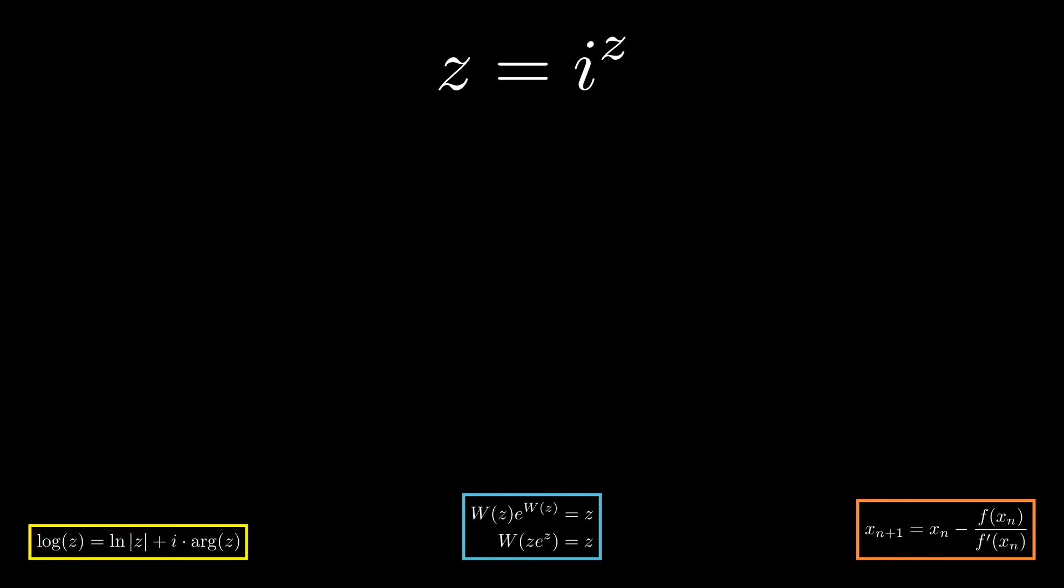And this is just begging to apply the logarithm to both sides so that we can apply that property of logarithm that lets us drop that power down front. So we have ln z equals z ln i. Since we're solving for z, I'm going to move all the z's to the left-hand side. And it's time to apply our first tool. How do we compute the natural logarithm of i?